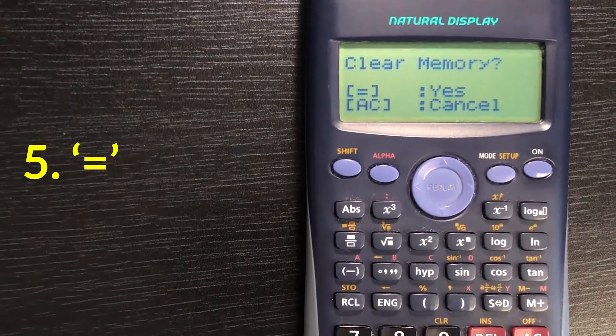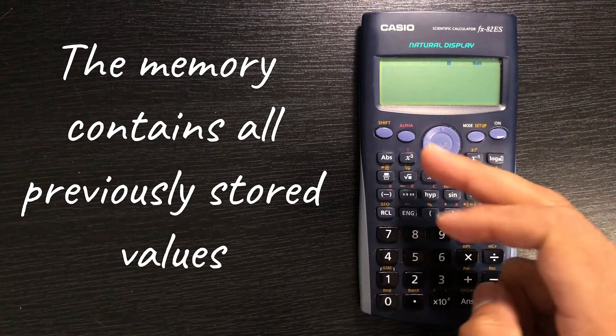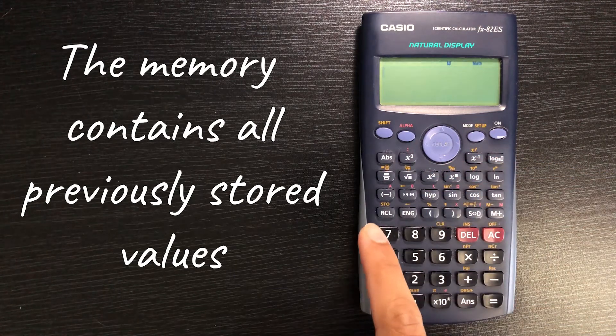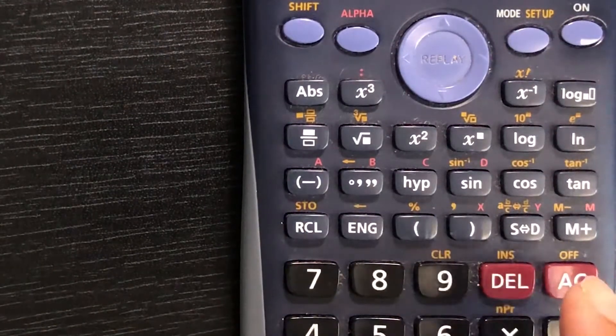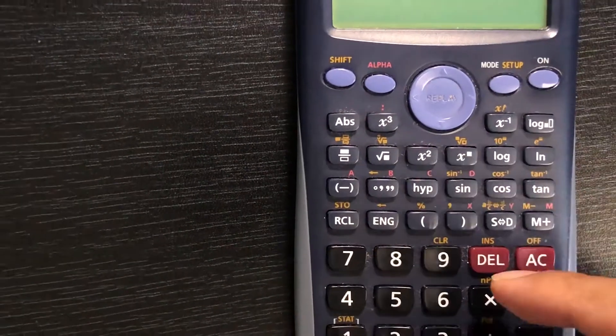So option two and then I press equals. Option two is your memory and what your memory is is essentially stored value. You can see in these letters in red a, b, c, d, x, y, m - these are letters which you can store values on.